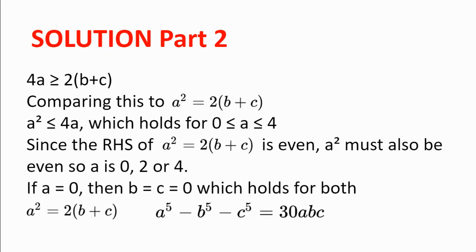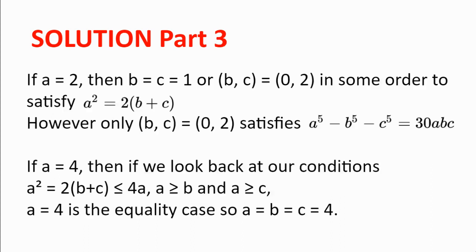If a is 0, then b equal to c equal to 0 must be true for a squared to equal 2 multiplied by b plus c. And this also holds for the second equation because 0 minus 0 minus 0 is equal to 30 times 0 times 0 times 0. If a is equal to 2, then for a squared to equal 2 multiplied by b plus c, b must equal c equal to 1, or (b,c) is (0,2) or (2,0). However, b equal to c equal to 1 does not satisfy the second equation, but (b,c) equal to (0,2) and (2,0) do satisfy a⁵ - b⁵ - c⁵ equal to 30abc. So those two are possible solutions.